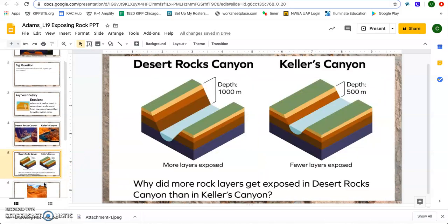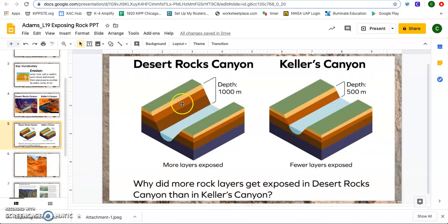However, as we look at our diagram, the same diagram we saw yesterday, we're actually going to think about, when we think about erosion, what's really happening in both the Desert Rocks Canyon and the Keller's Canyon? We noticed yesterday that more layers were exposed in the Desert Rocks Canyon, which we can visually see in this diagram. And then we noticed here in the Keller's Canyon, that fewer layers were actually exposed. And so now as we think about that, I have a new question for you. Why do you think one canyon is deeper than the other?